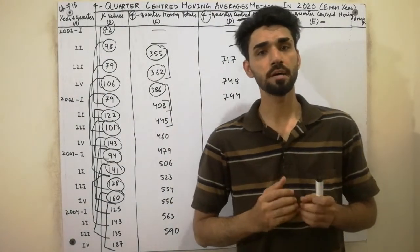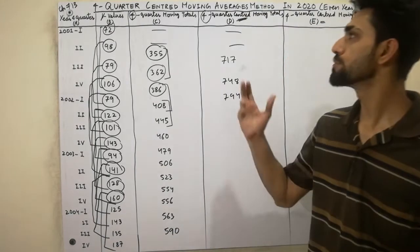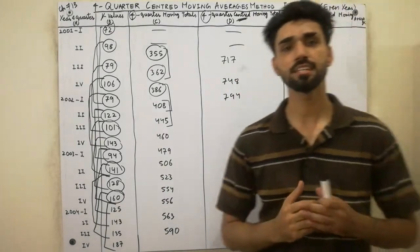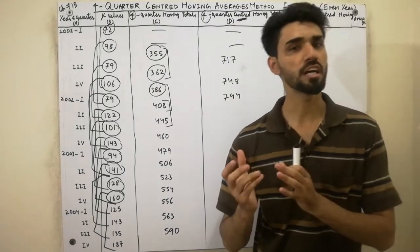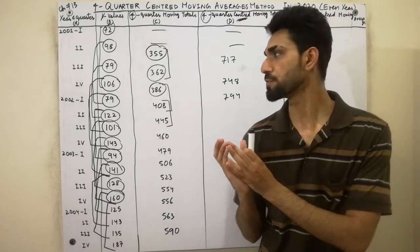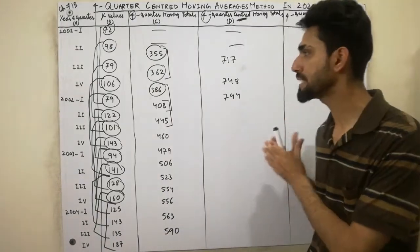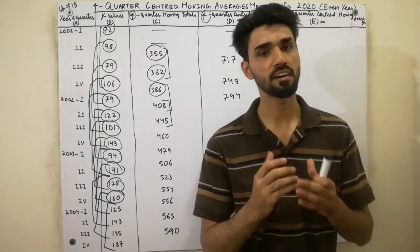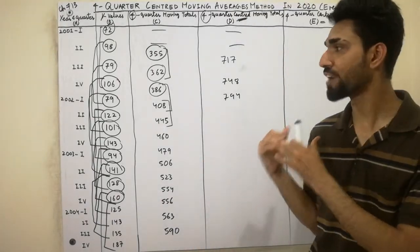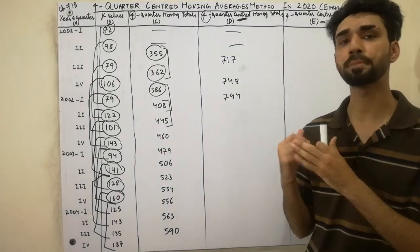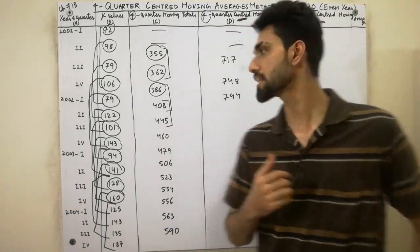Assalamu alaikum dear friends. Today I am here to explain the 4 quarter setup of your event — the centered moving average method. I discussed this in a first video, but due to some reason I could not complete it. I will complete it now. So let's watch this video completely till the end if you want to gain more concepts. Let's start the video.